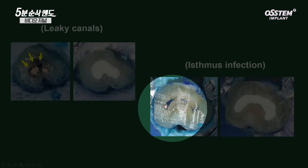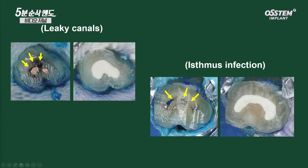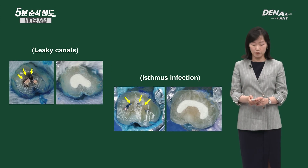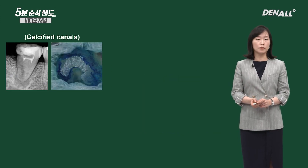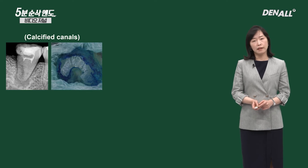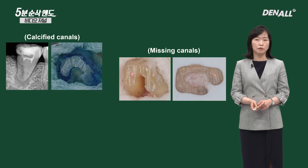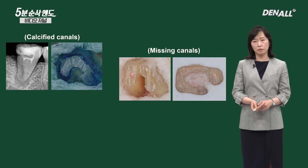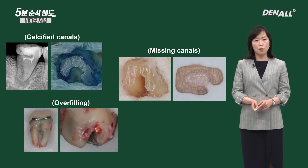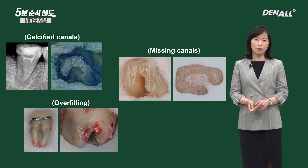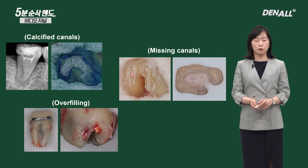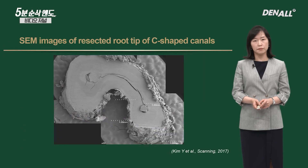Due to C-shape characteristics, there's isthmus around the GP. Infection occurred in the isthmus area, leading to surgery. When we do root resection, calcification was done so much that canal shape could not be differentiated — there was a missing canal. In this case, except for ML, you cannot see anything. Missing canal and overfilling are reasons that lead to failure of C-shape root canal treatment and surgery.